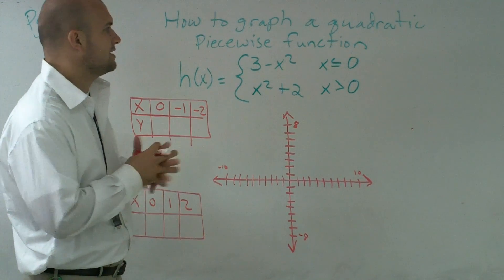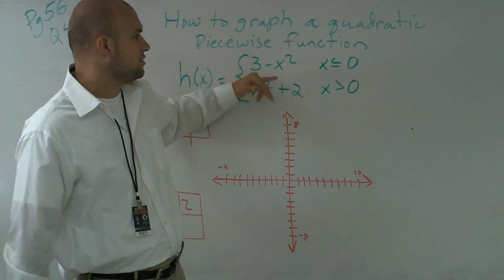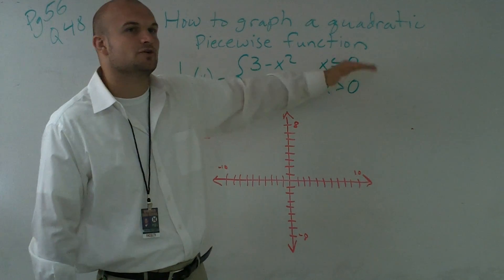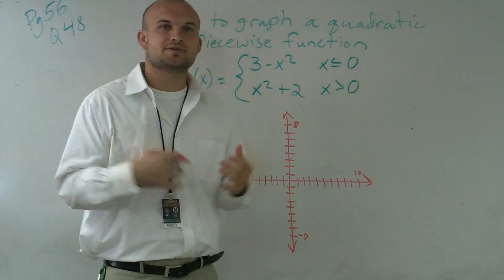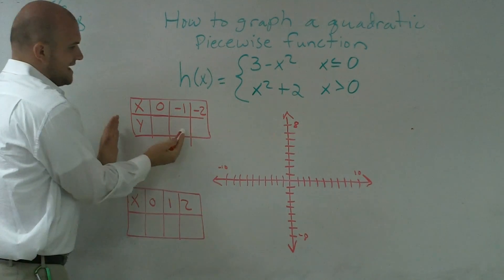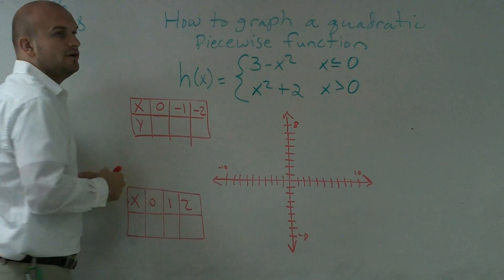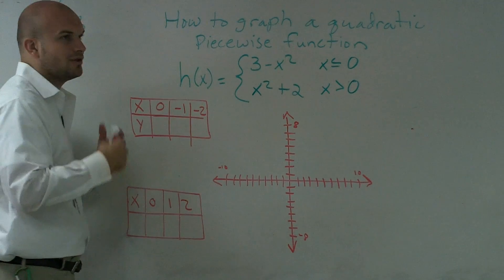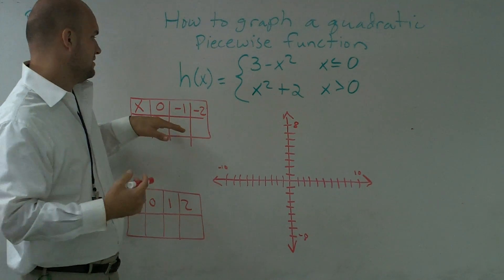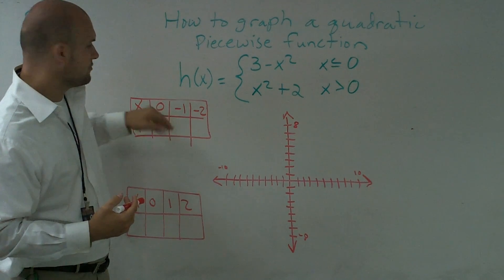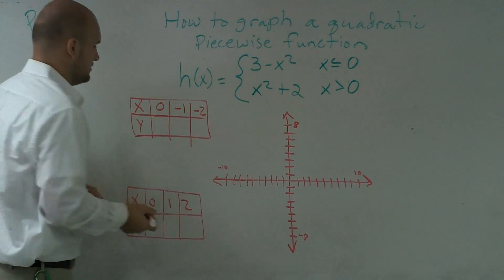However, a couple things I want to notice is this function is only going to be true when x is less than or equal to 0. So what I did was I kind of know what the general shape of my parabola is going to be. What I created was a table over here that we can go ahead and fill in the values and then that will give me a general outline of what exactly, or at least three points that my parabola will follow.